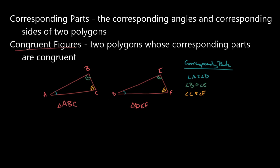The next thing I need are my corresponding sides. So I would need side AB congruent to side DE, side BC congruent to side EF, and side AC congruent to side DF. These are all the corresponding parts. Just because two parts are corresponding doesn't necessarily mean they're congruent, but these are the six things that must hold.